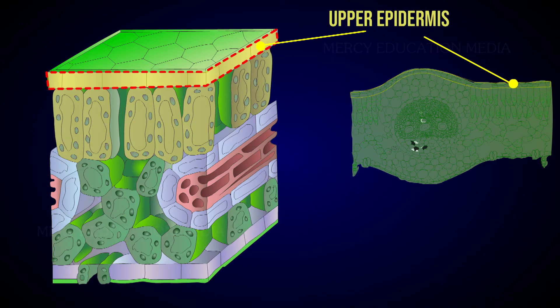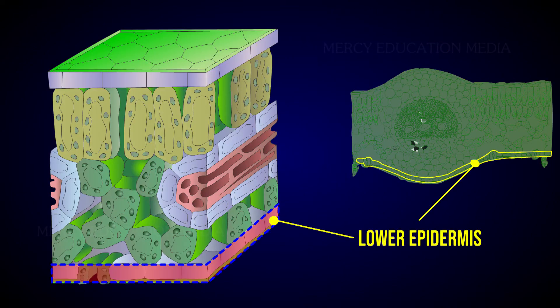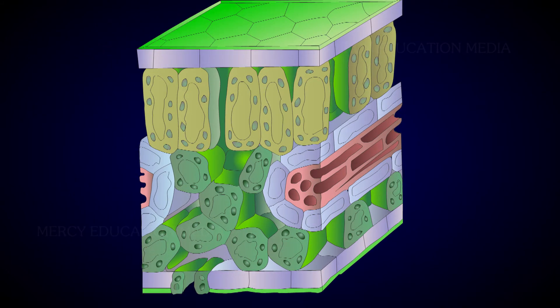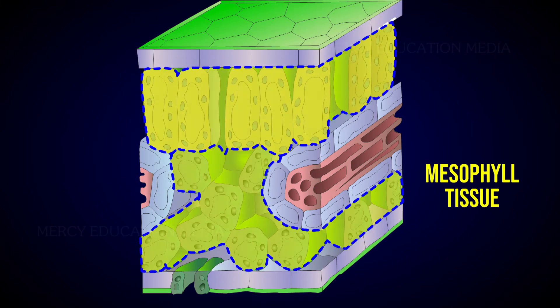The dermal tissue system consists of an upper epidermis and lower epidermis. Stomata occur in both epidermis layers but more frequently in the lower epidermis. The ground tissue system that lies between the epidermal layers of a leaf is known as mesophyll tissue.